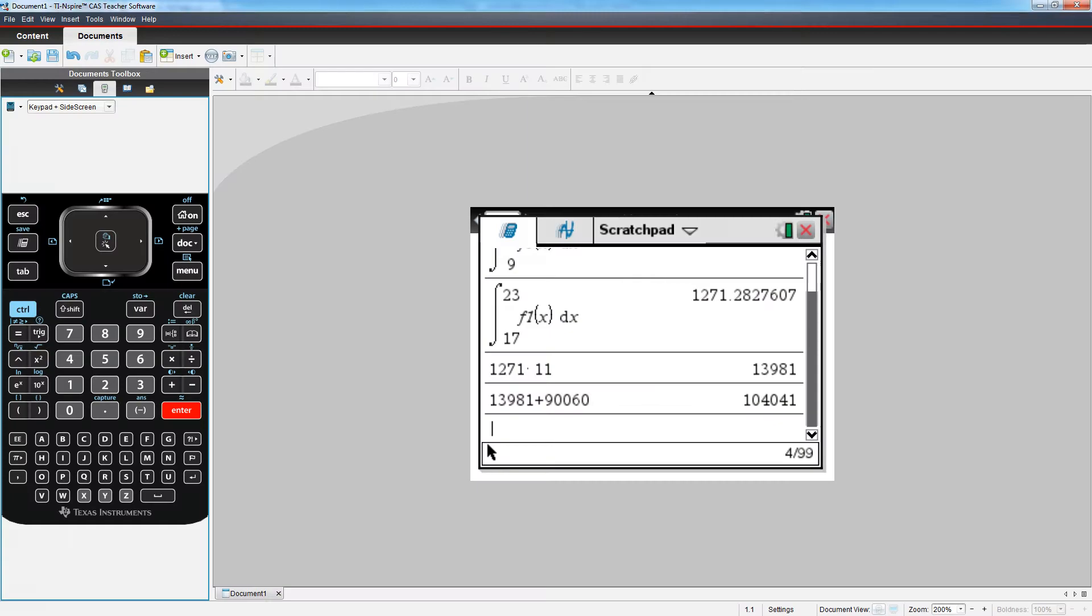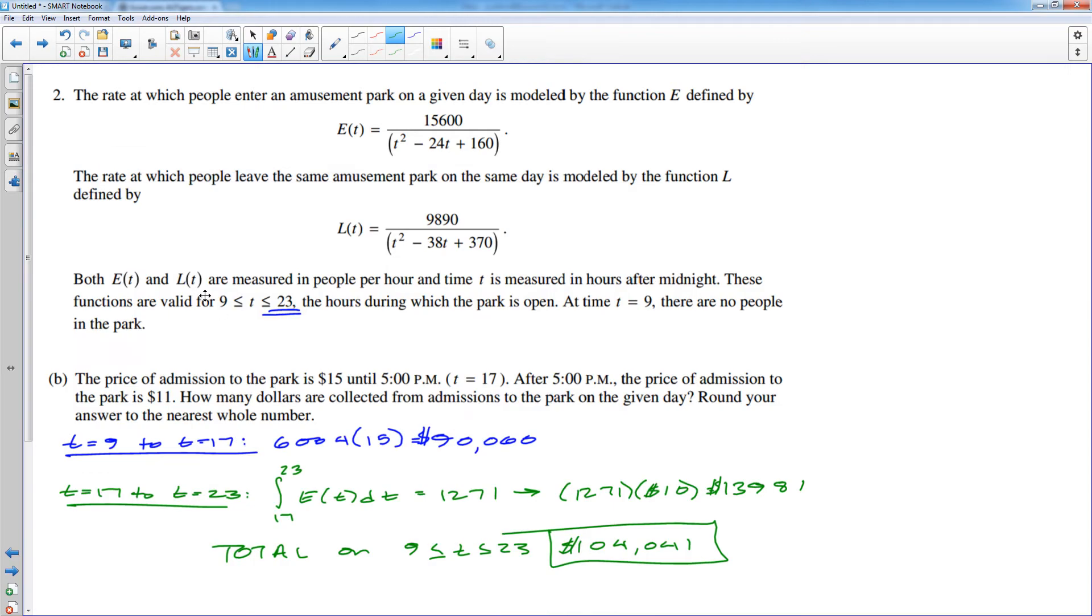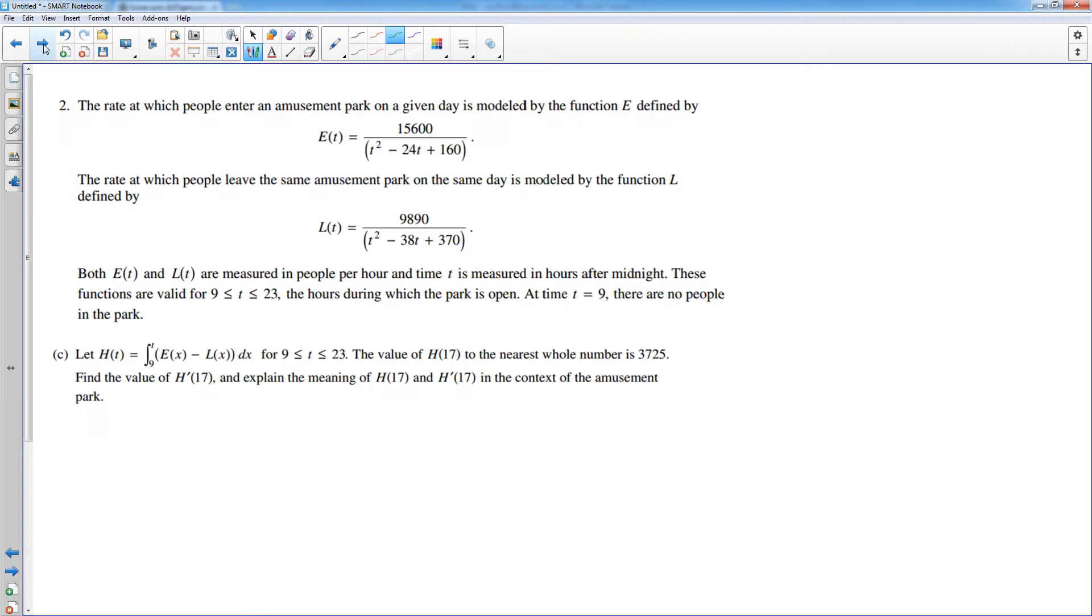Good. Make sure I copied that down right. Yeah. All right. So there's part B. The A and B were not too bad. They give you the rate that people enter to get the number of people that enter. You will simply do the anti-derivative. And part B, they factored in money.